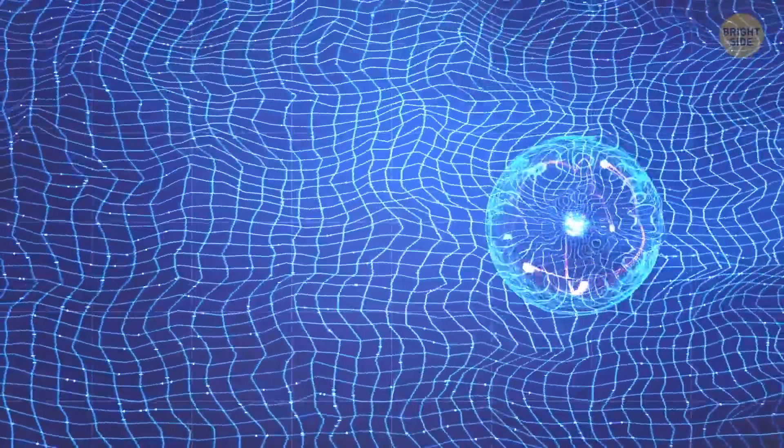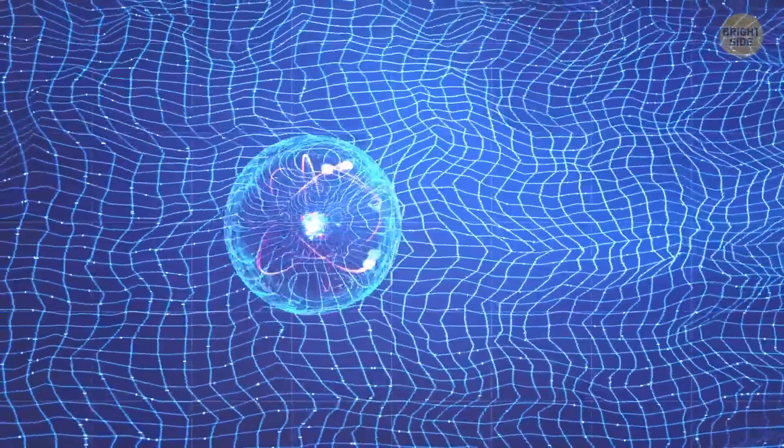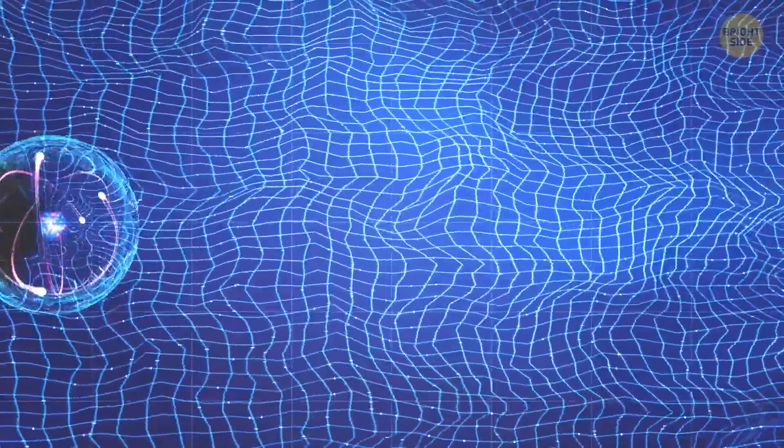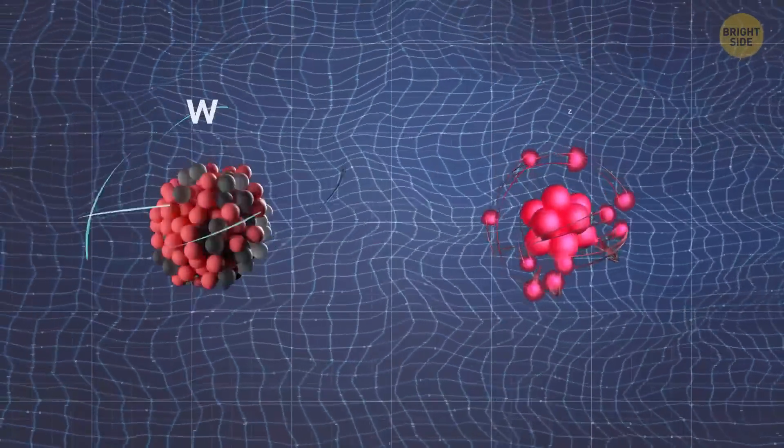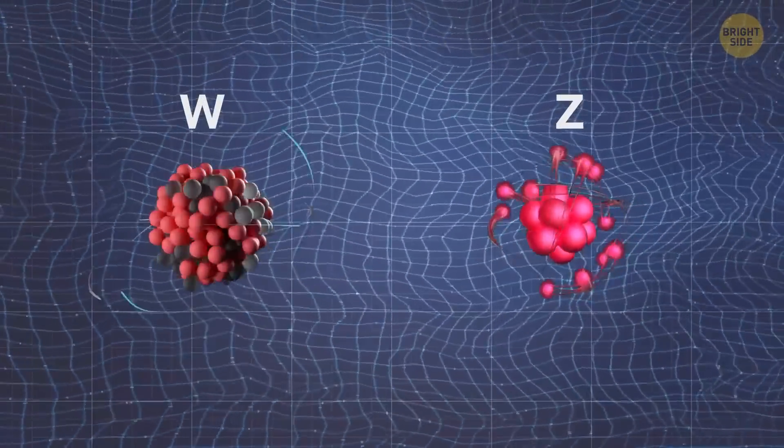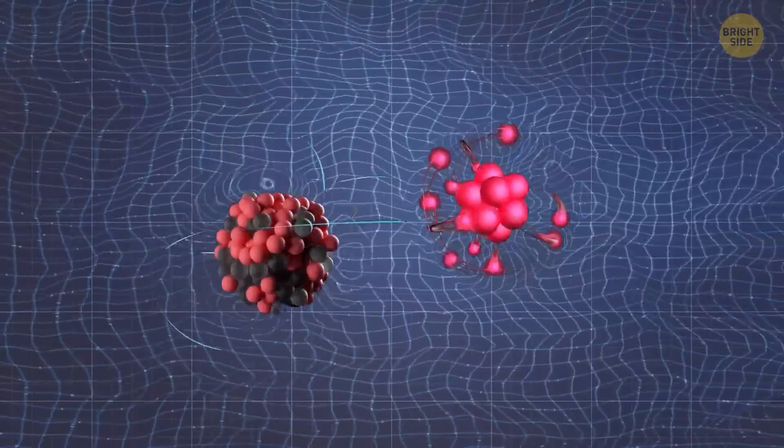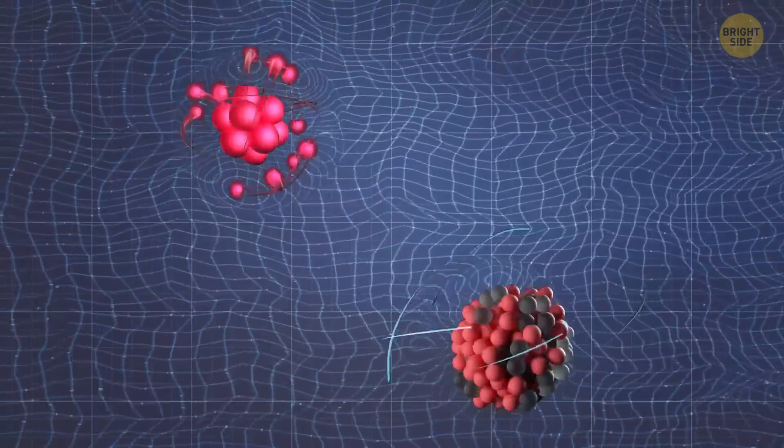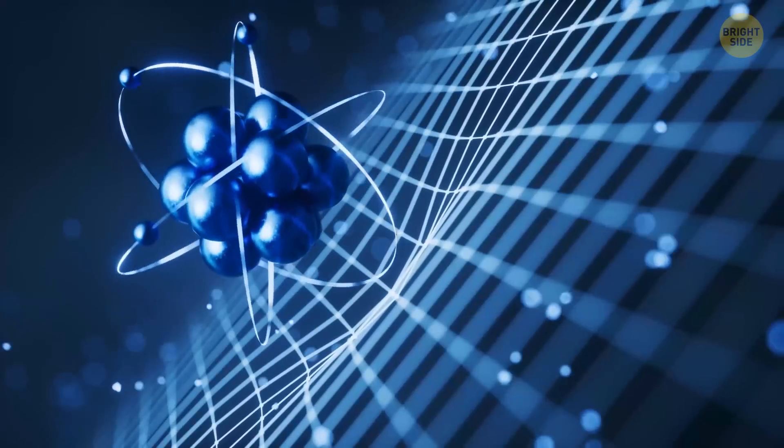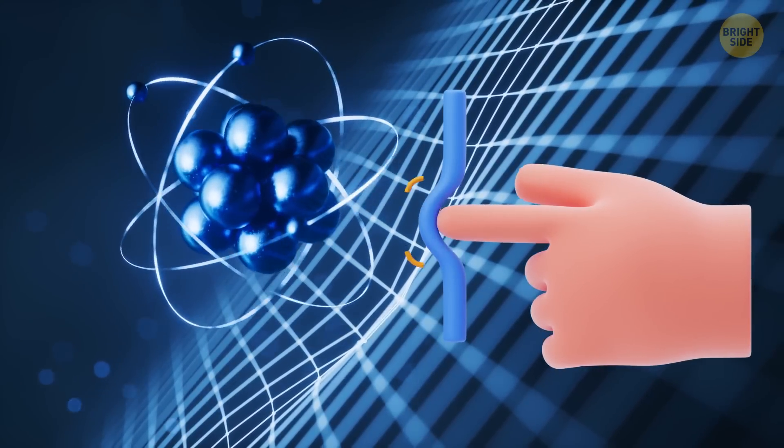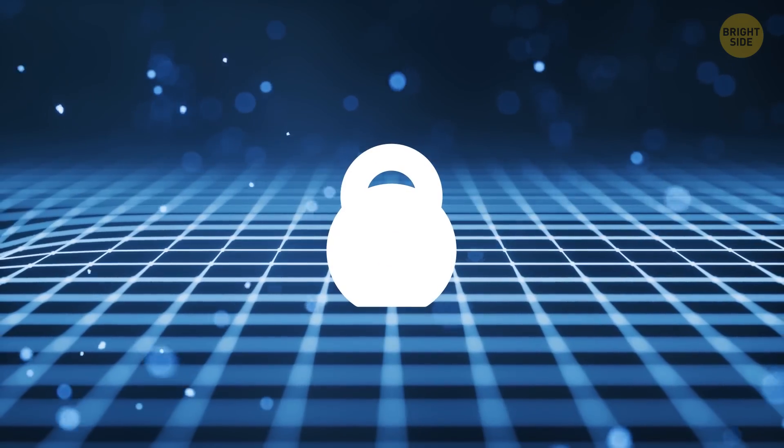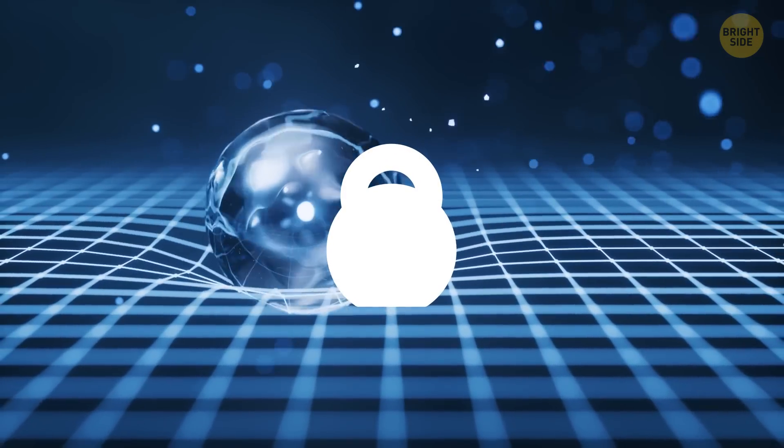Now imagine you're a tiny little particle swimming through this ocean. Just like a boat in the water, you'll feel resistance as you move through the Higgs field. Some of these particles are like speedboats - they can zip through the Higgs field without feeling much resistance at all. And others, for example the W and Z bosons, are more like giant cruise ships. They're big and heavy, so they feel a lot of resistance as they move through the Higgs field. And that resistance is what gives particles mass. The speedboats that slide easily don't pick up any mass, but giant cruise ships interact with the field more strongly and pick up a lot of mass.